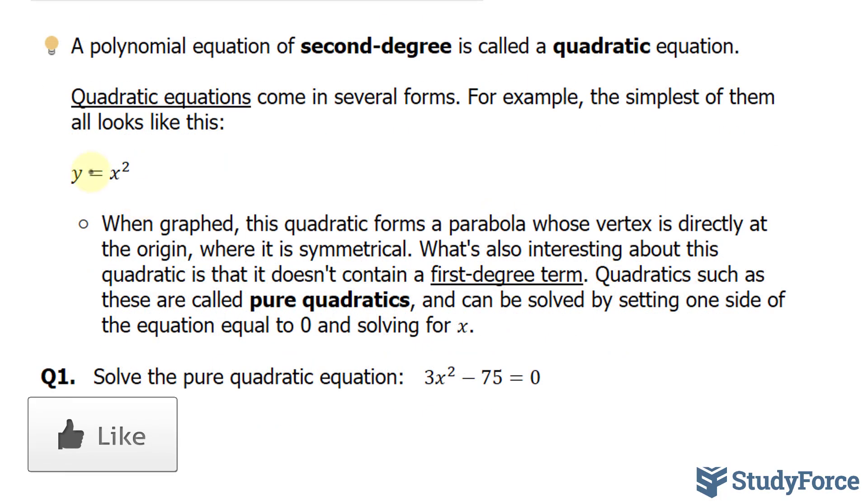Take for example the equation y is equal to x squared. We don't have the addition or subtraction of another term, such as x. Quadratics such as these are called pure quadratics and can be solved by setting one side of the equation equal to 0 and then solving for x.